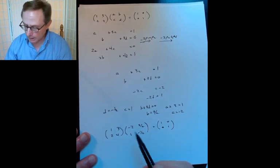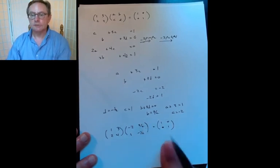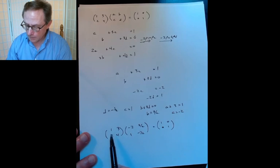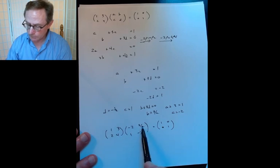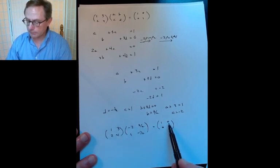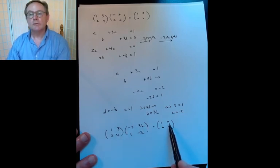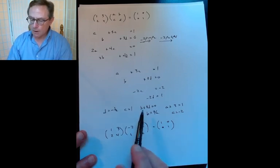Okay, so the conclusion is that 1, 3, 2, 4 times minus 2, 3 halves, 1, minus 1 half works out to be 1, 0, 0, 1. And just to check one, how about if we check this 3 halves here. So I need the 1, 3 combined with the 3 halves minus 1 half. So 1 times 3 halves, 3 times minus 1 half. Yes, sure enough.